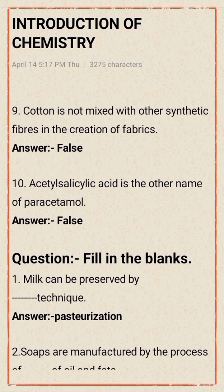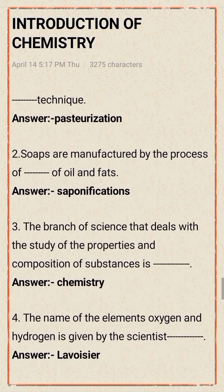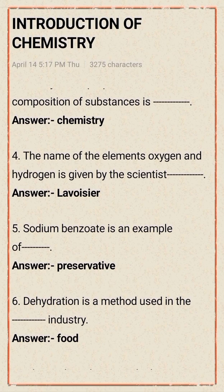Next question pattern: fill in the blanks. Number one: milk can be preserved by the pasteurization technique — answer: pasteurization. Number two: soaps are manufactured by the process of saponification of oils and fats — answer: saponification. Number three: the branch of science that deals with the study of properties and composition of substances is — answer: chemistry. Number four: the names of the elements oxygen and hydrogen were given by the scientist — answer: Lavoisier.